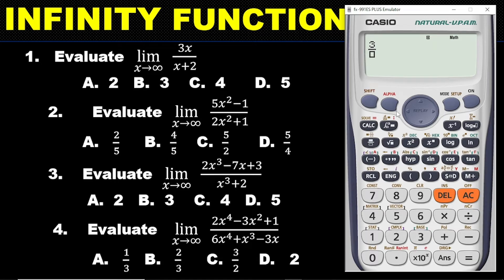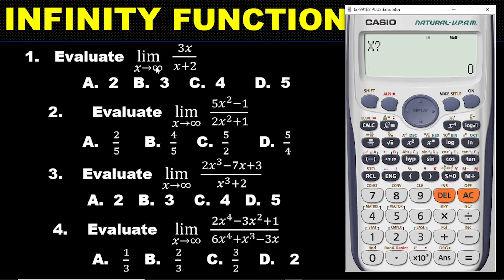We have 3x, so press alpha then x, then go down — we have x, so alpha x, plus 3. Now that you are done entering your data, the next thing is to hit the calc button. The calculator is asking what value of x you are going to use. The question says the limit is as x approaches infinity.